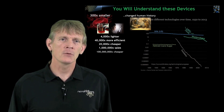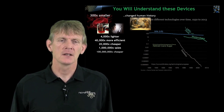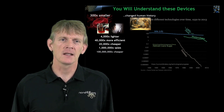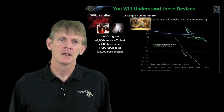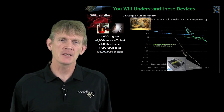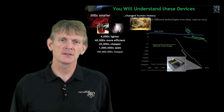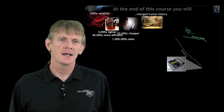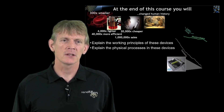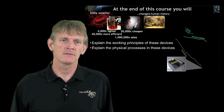Now, you will understand these devices here: transistors, photovoltaic devices, and lasers. And by the end of the course, you'll appreciate these transistors at the end of the roadmap, and you'll be able to explain these transistors and these devices.